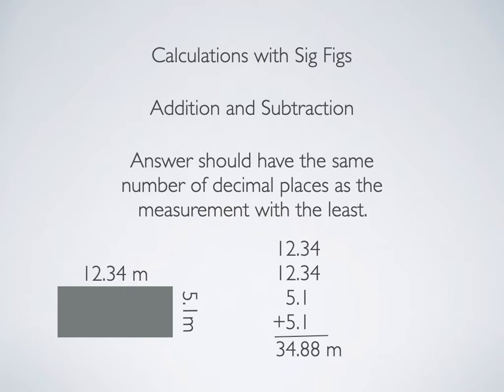This first eight all the way on the right comes from adding up two estimated digits. So at best, that measurement is going to be an estimate. These two threes here in the first two measurements are certain digits, but the 0.1 on each of the 5.1s is an estimated digit. So even if the threes are certain, if you're adding them to an estimate, you get another estimated digit.